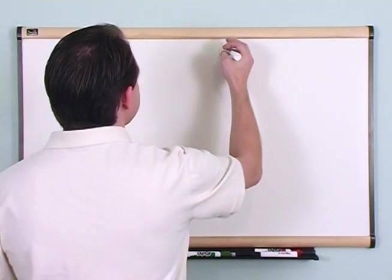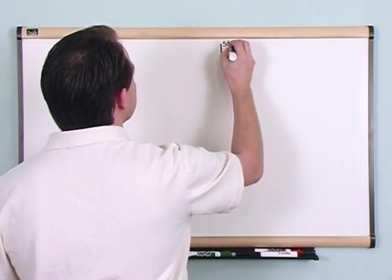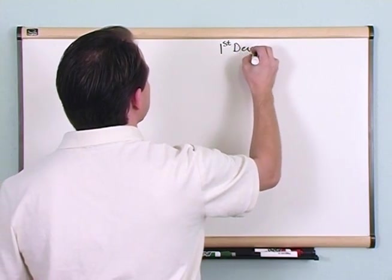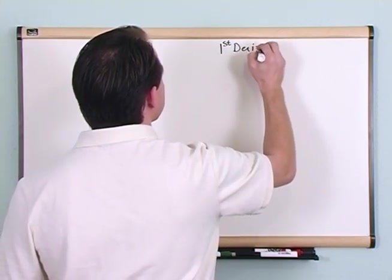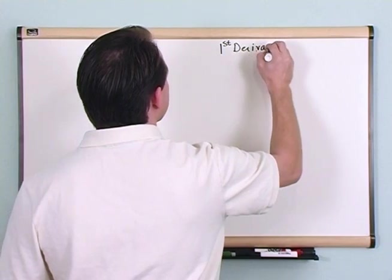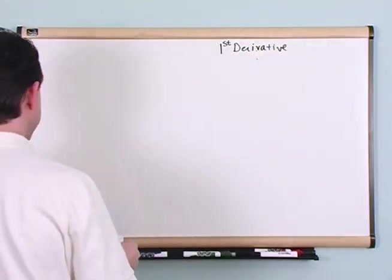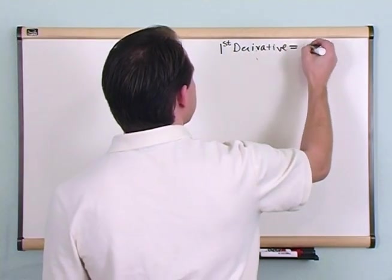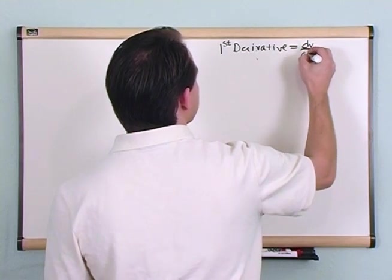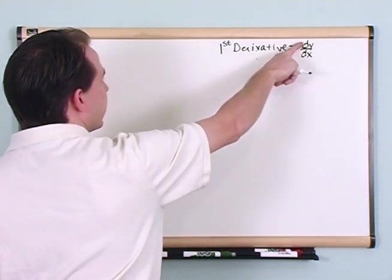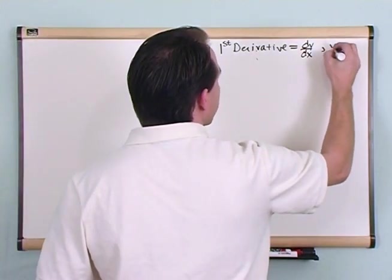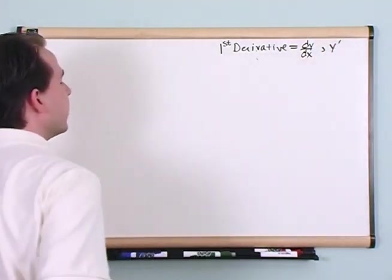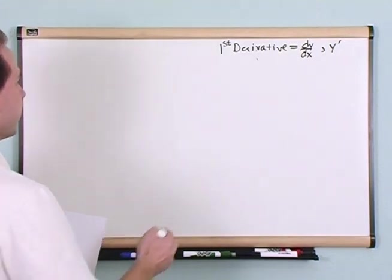Just recall that the first derivative is written as dy/dx, which is the derivative of the function y with respect to x. You can also write that as y with a little prime on it, and that means first derivative.